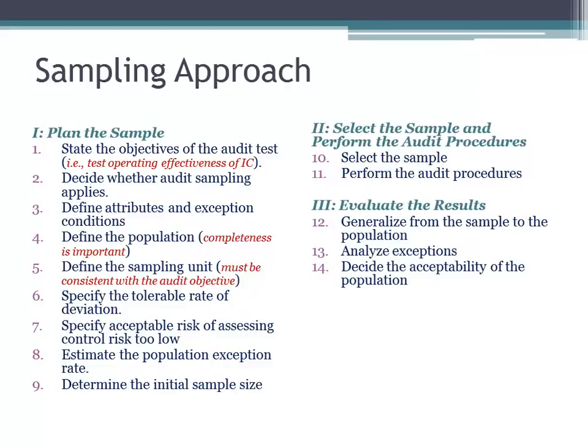If there's no shipping document, that's an exception. If there's no purchase order or voucher package with those three items — a purchase order, receiving report, and vendor invoice — that's an exception. As you go through this process of understanding your client's internal controls, you're identifying what attributes make up those controls, and if those attributes are not there, then that's an exception.